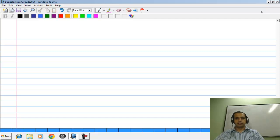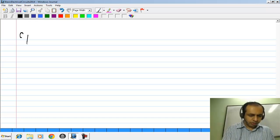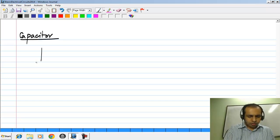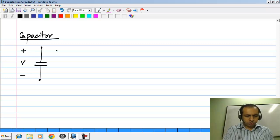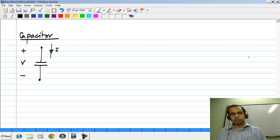The next basic element is a capacitor, and it is given by this symbol. As usual, we define a voltage V and a current I consistent with passive sign convention.